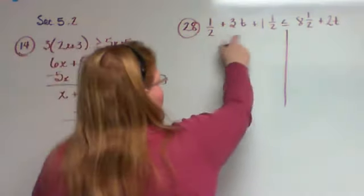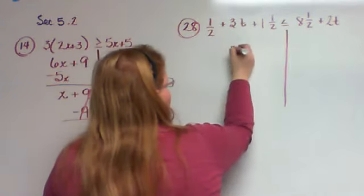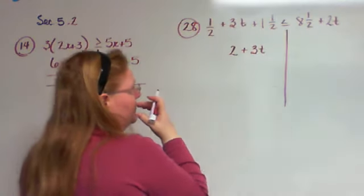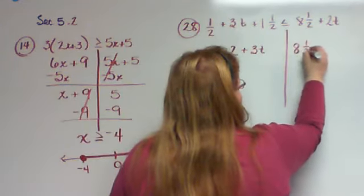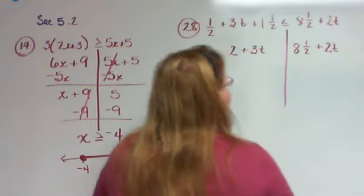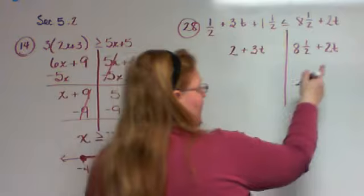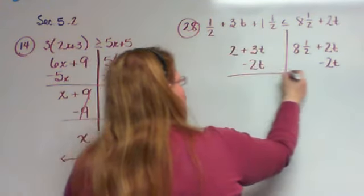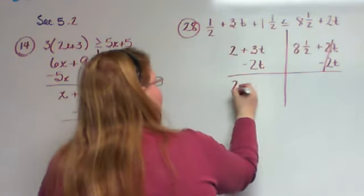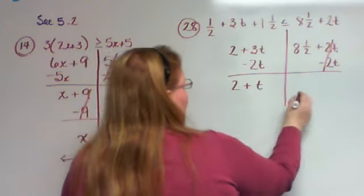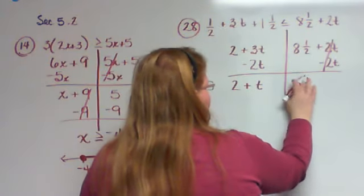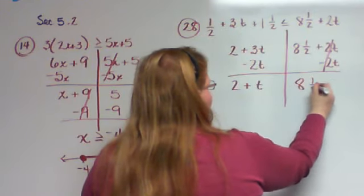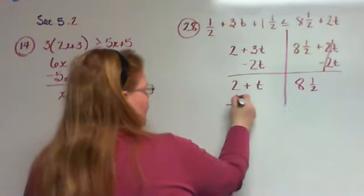Combining like terms over here: ½ plus 1½ is just 2 plus 3t, gives me 8½ plus 2t. Now I need to subtract my 2t's. That gives me 2 plus t. Doing stuff in my head before I get to do it on here. 8½. Now I'm going to subtract 2.